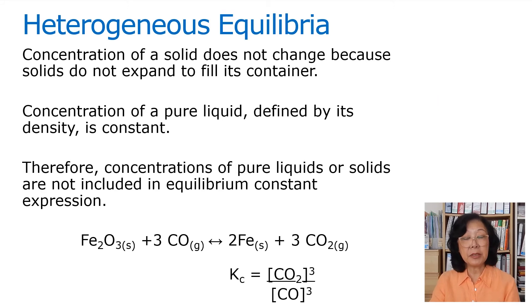The equilibrium constant in terms of concentration is expressed as CO2 concentration raised to the power of 3 over concentration of carbon monoxide raised to the power of 3. And iron and iron 3 oxide are not included in this expression.